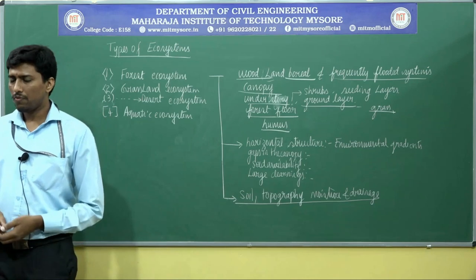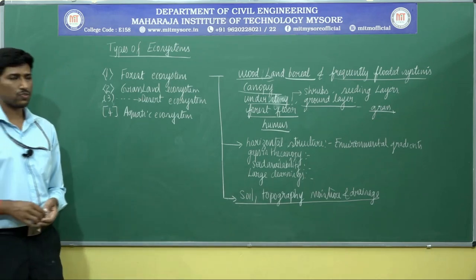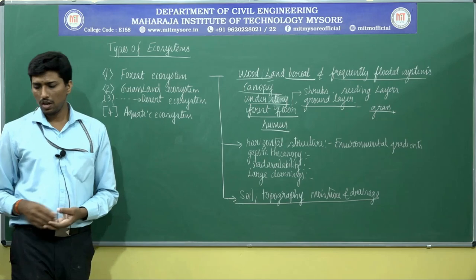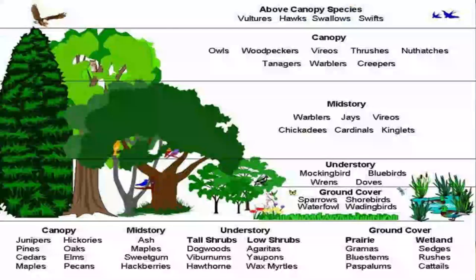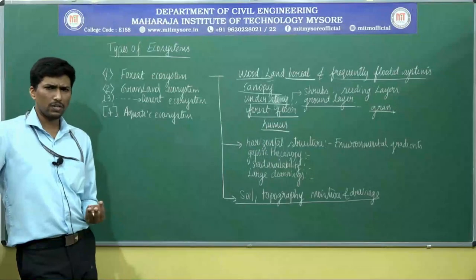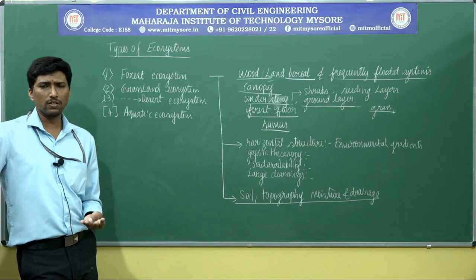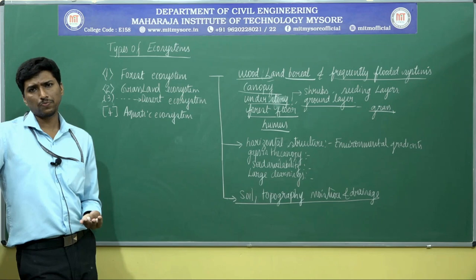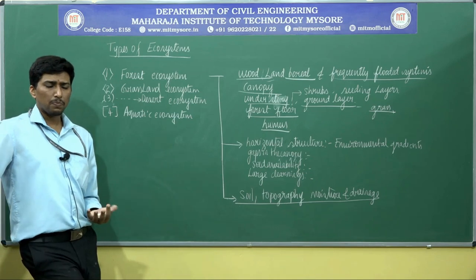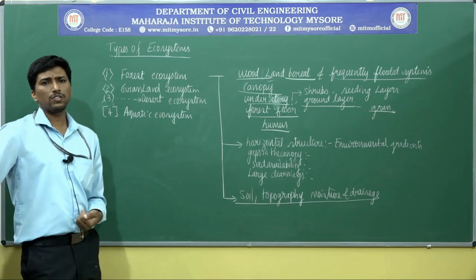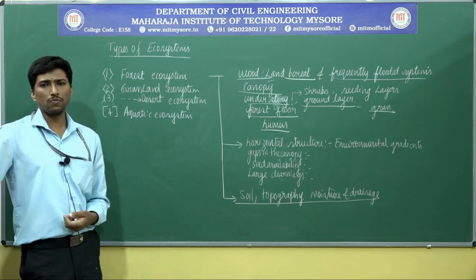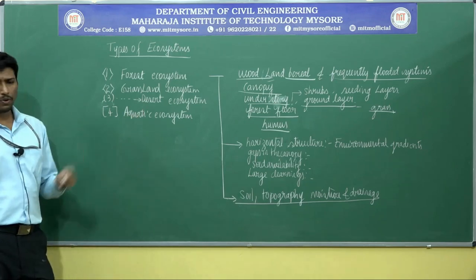The forest ecosystem process involves related species — wild animals, insects, birds, reptiles, mammals, and amphibians. These species have dominant ecological succession. Based on this, we determine the type of forest ecosystem. The process also comprises biomass productivity.